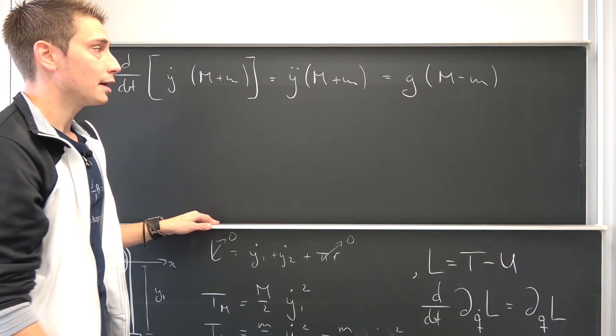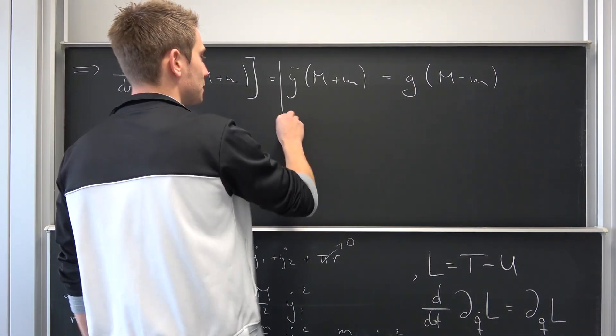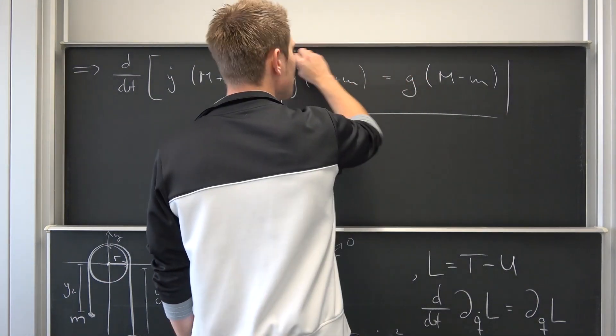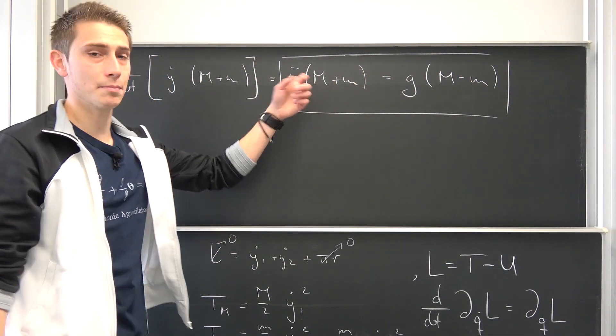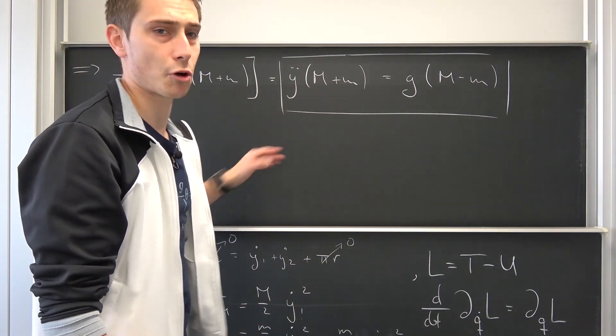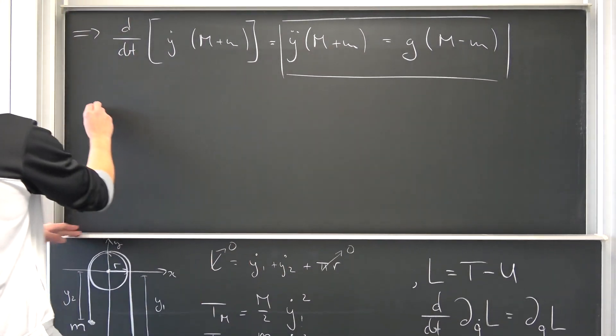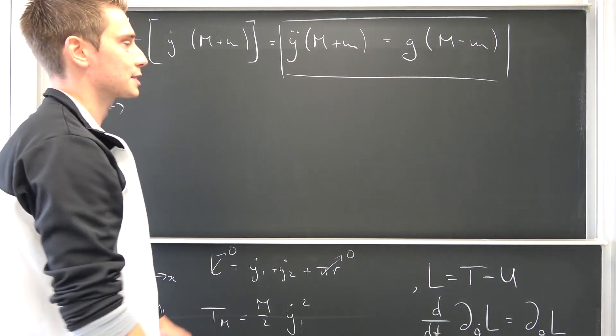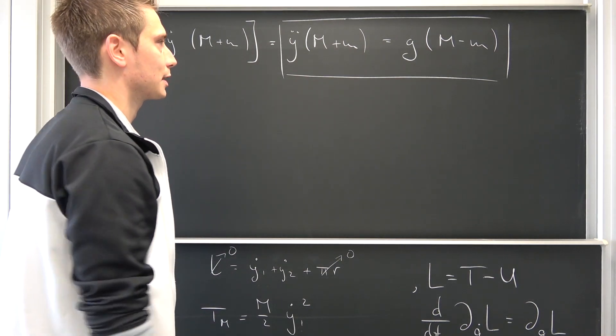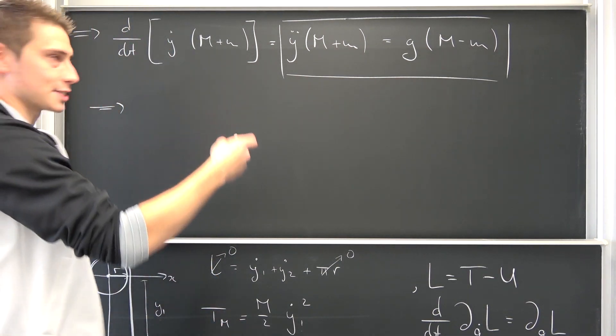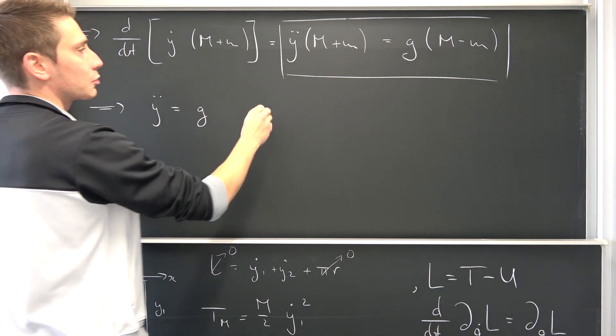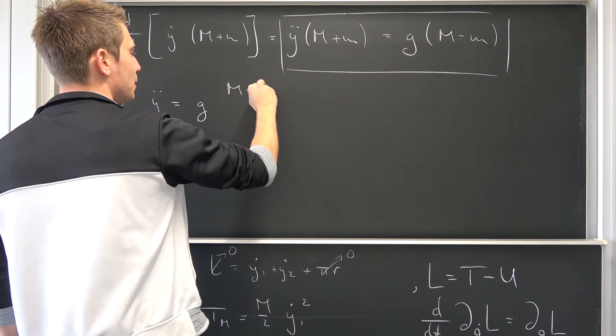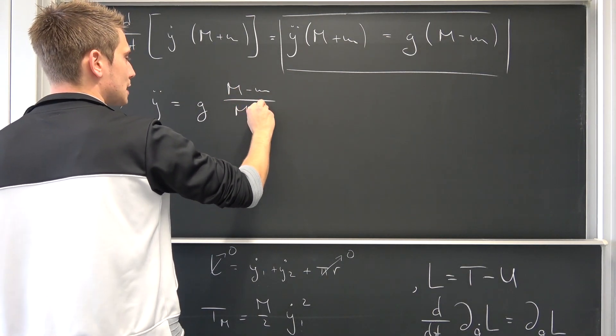And basically we are done at this point. Now this right here is our equation of motion, and we can actually divide both sides by big M plus small m. Masses are not defined negative, so this is always greater than zero. Or if we don't have any mass, then it's zero, but that wouldn't make any sense. Then we wouldn't have this system. So Y double dot is thus equal to g, the gravitation constant, M minus m over M plus m.